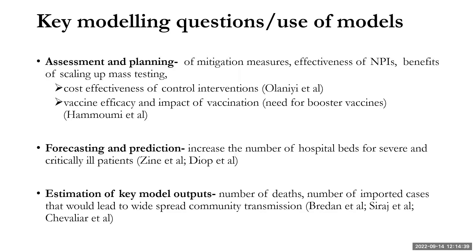Looking at key modeling questions and policy use, we grouped models into different categories: assessment and planning models, models used for forecasting and prediction, and models used for estimation of key outputs. For assessment and planning, the key findings included assessment of the effectiveness of non-pharmaceutical interventions such as lockdown, social distancing, and curfews; the benefits of scaling up mass testing; cost effectiveness of control interventions; vaccine efficacy; and the impact of vaccination and need for booster vaccines.